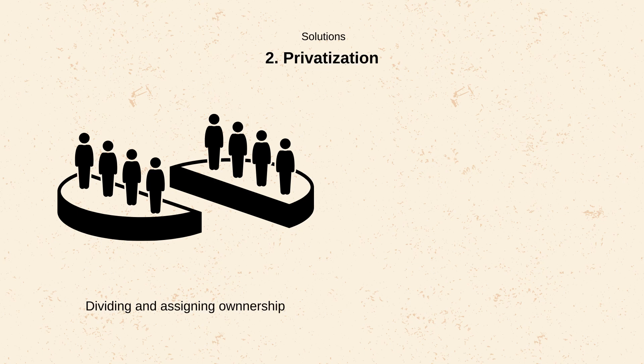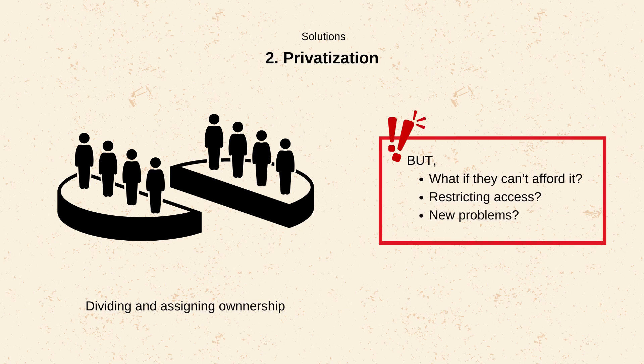Privatization: dividing and assigning ownership. Dividing the common resources into smaller, individually owned units creates a direct incentive for owners to manage their portion sustainably for long-term gain. But there are potential downsides. What if some people can't afford to own a piece of the resource? Does everyone get a fair shot at the benefits? Could privatization restrict access for some who depend on it for their livelihood, or lead to environmental problems such as neglecting the land for short-term profit?